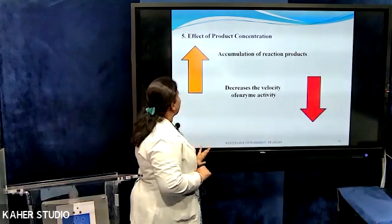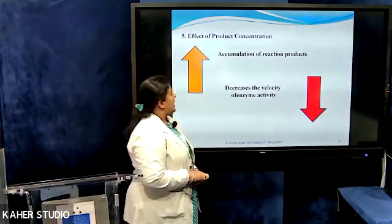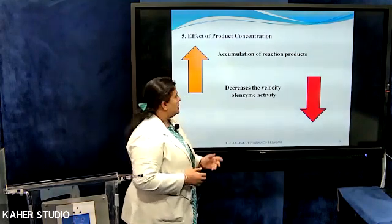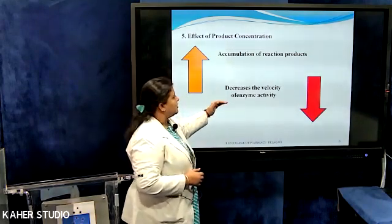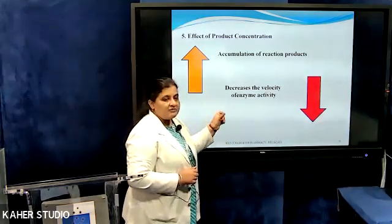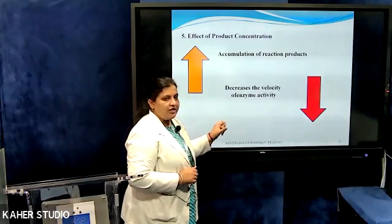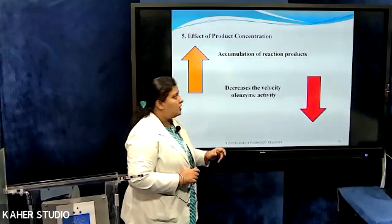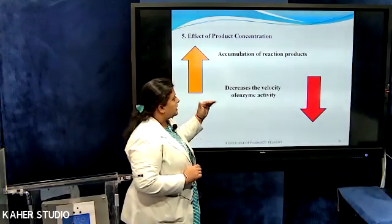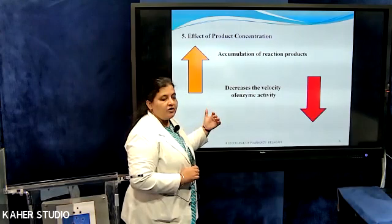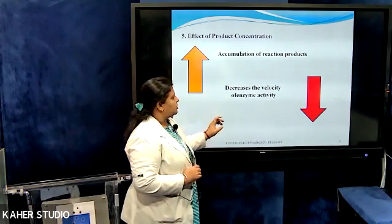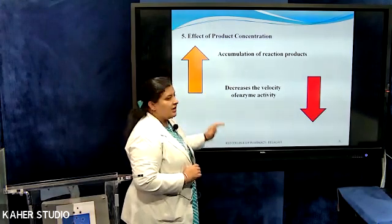The next factor is the effect of product concentration. As more product accumulates, there will be a decrease in the velocity of the enzymes. Enzymes react with the substrate to form an enzyme-substrate complex and then a product. As more products accumulate and the enzymes are unavailable, the substrate will not be acted upon. That is why accumulation of reaction products will decrease the enzyme activity.